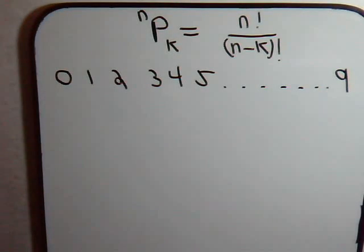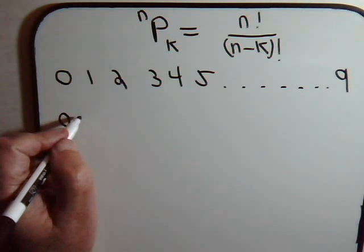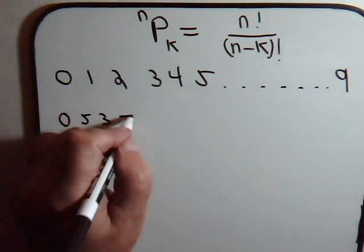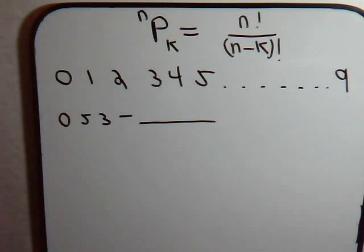So we have these 10 digits and the first question we want to ask is, if we use these 10 digits to form 7 digit telephone numbers, how many different ways can we do it? Assuming that we can have 0 at the beginning of one of our telephone numbers, for example, maybe 0, 5, 3, dash, whatever. If we can have 0 being a leading number here among our telephone numbers, how many different telephone numbers can we form?